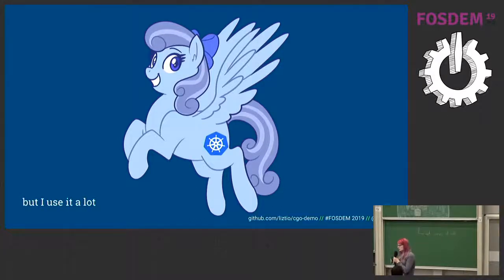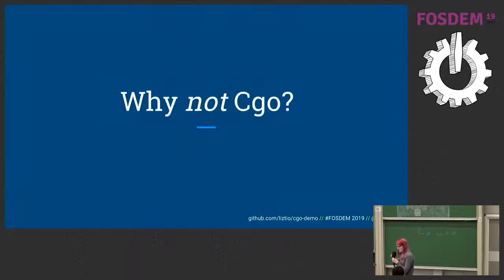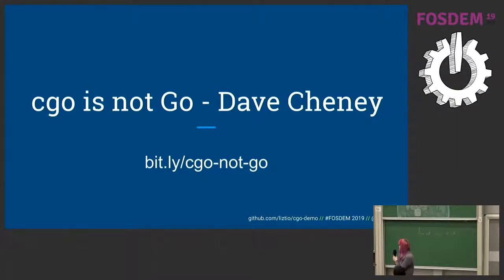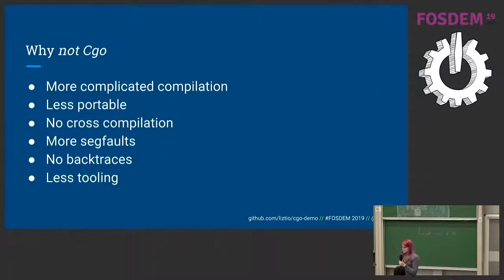And this is the most important part of this talk. Why not CGo? I'm going to channel my coworker, Dave Chaney. He has a very good talk. CGo is not Go. Just go ahead and Google it. But to summarize, it makes compilation more complicated, less portable, no cross-compilation, more seg faults, no backtraces, less tooling. It's a mess. It's going to be very difficult to debug when it goes wrong, and it's going to.